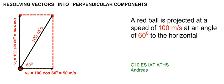Therefore, in this case, the horizontal velocity and the vertical velocity will have no influence on each other.